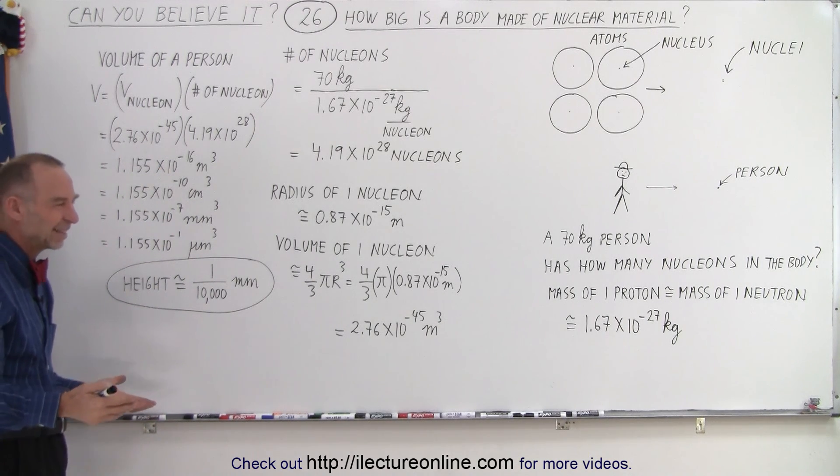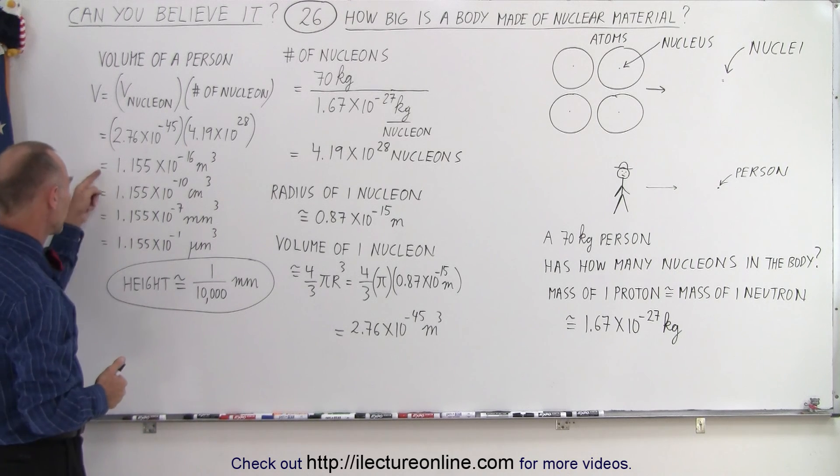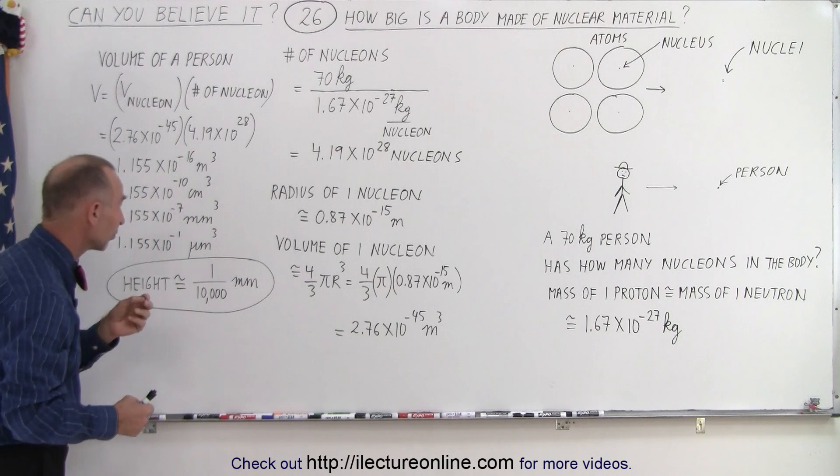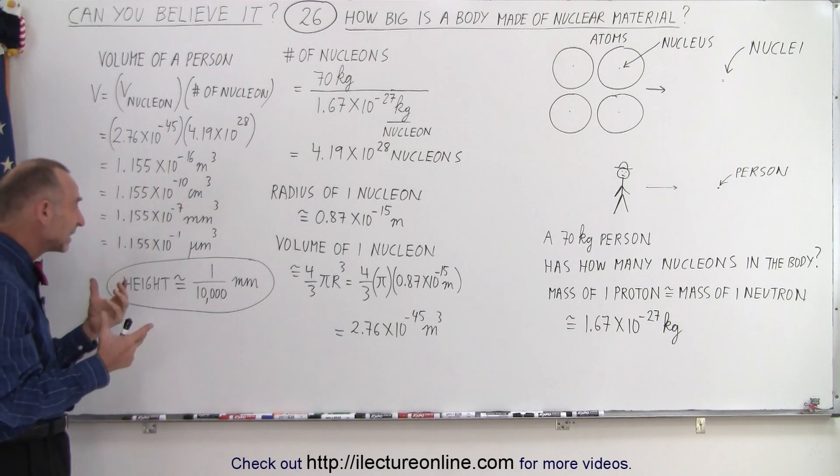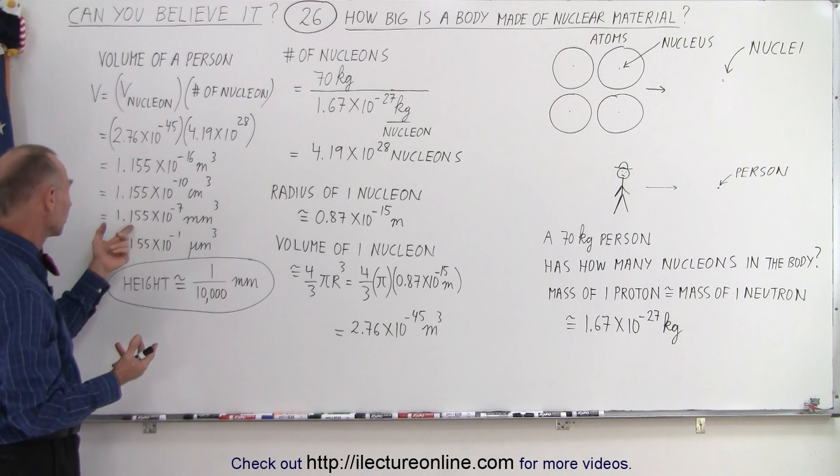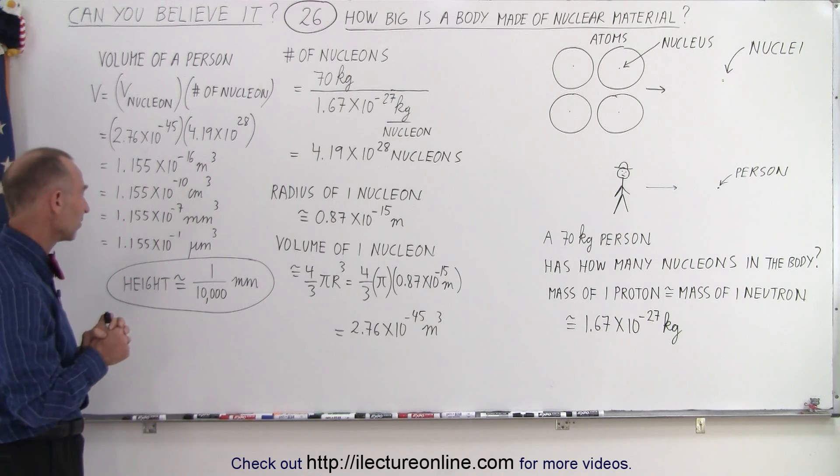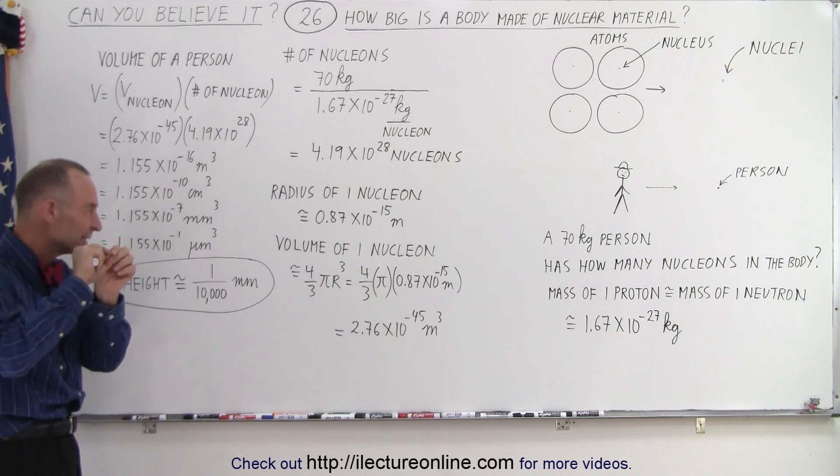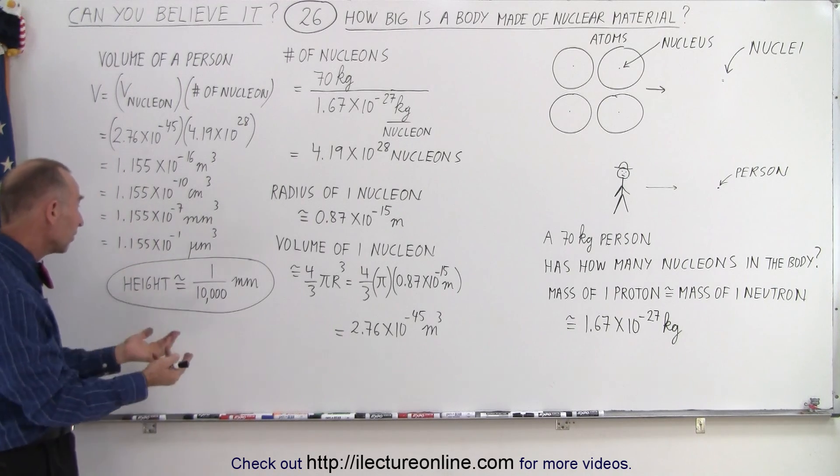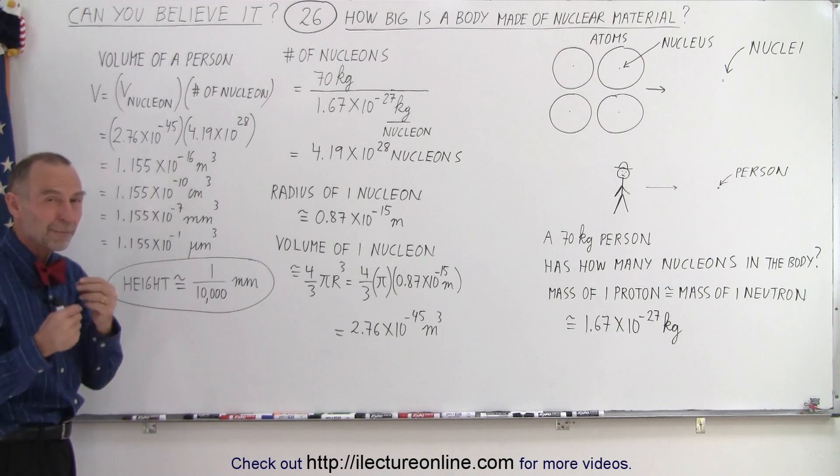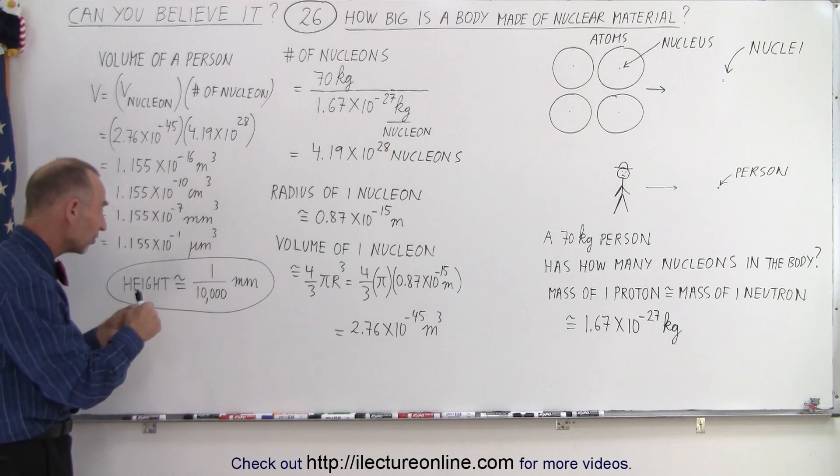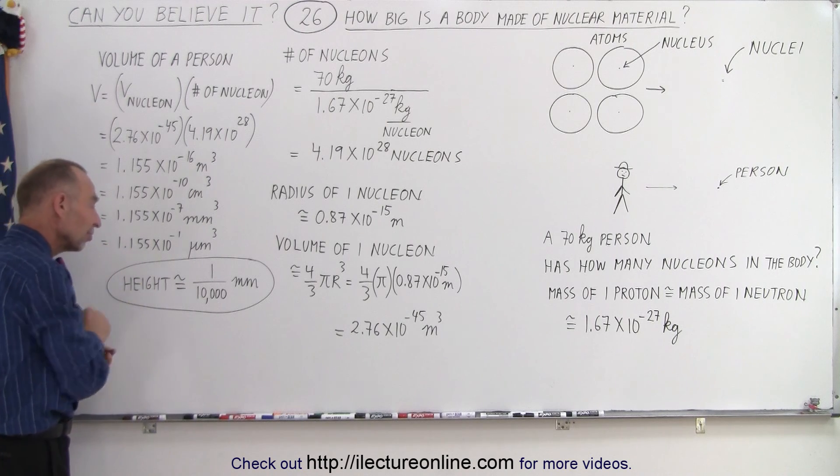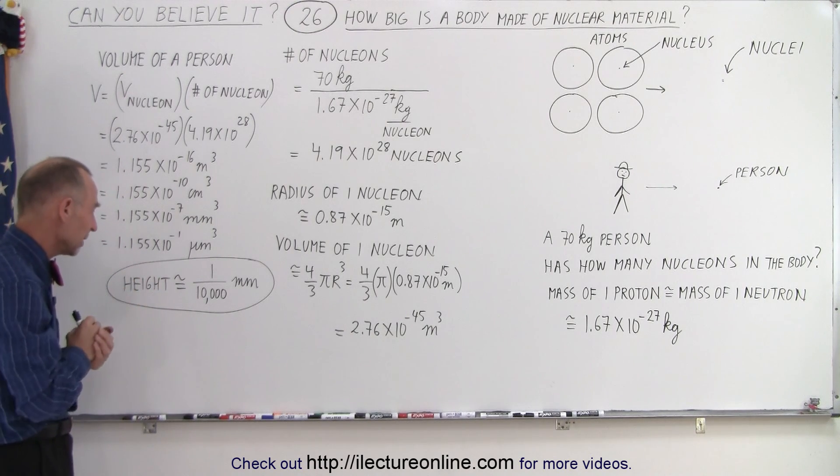So, when we convert that to cubic centimeters, we have about 1 times 10 to the minus 10 cubic centimeters. Convert to cubic millimeters, that gives us 1.155 times 10 to the minus 7 cubic millimeters. Now, we know that a cubic millimeter is a very tiny little volume. It would be a tiny fraction of that. When we convert to micrometers, a micrometer is 1/1000 of a millimeter, it would be about 11% of the volume of a cubic micrometer.